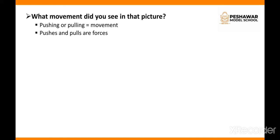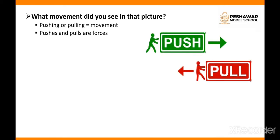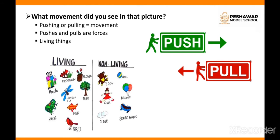When we push or pull something, we make it move. Pushes and pulls are forces we apply to things. Living things — when we move our arms or legs, we are using force. Everything needs a force to make it move. Living things like people and animals can move on their own, but non-living things cannot move by themselves — they need force. We also use some machines to help us move things.